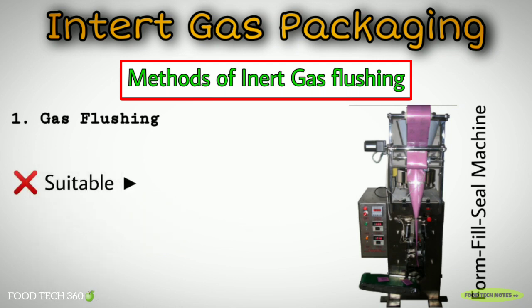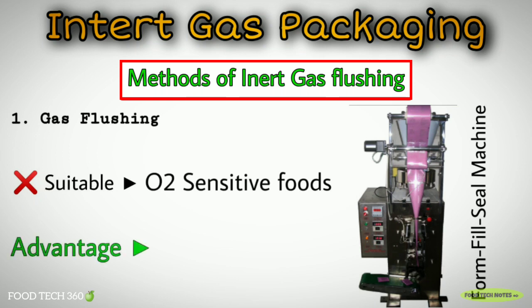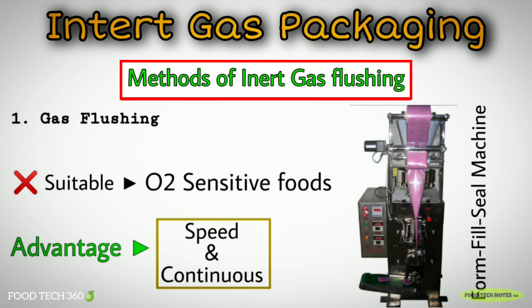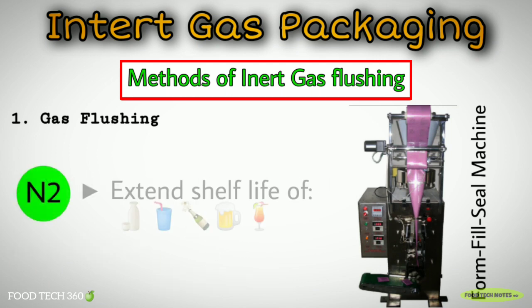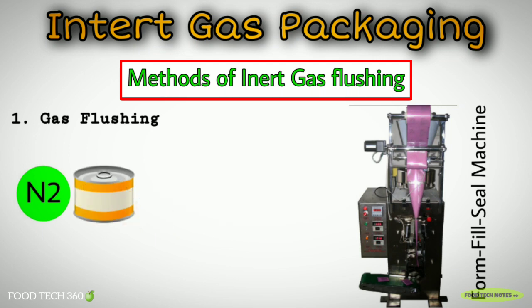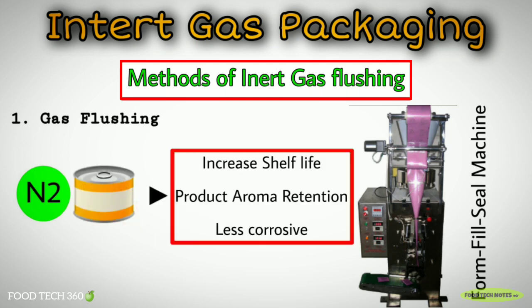The gas flush technique is not suitable for the packaging of very oxygen sensitive foods. The great advantage of the gas flush process is speed, since it is a continuous operation. Flushing with nitrogen has been introduced to extend the shelf life of beverages. The benefits of flushing cans with nitrogen include increased shelf life, retention of product aroma, and reduced can corrosion.